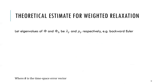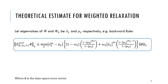The matrix form of this error propagator can be written in terms of phi and phi_delta. Let the eigenvalues of phi and phi_delta be lambda_gamma and mu_gamma respectively, where gamma goes from 1 to the number of points in space. Substituting these into the previous matrix and doing some algebra, we derived the theoretical convergence estimate for weighted relaxation. Unfortunately, this did not turn out to be sharp, but by simplifying in a different way, we could derive a sharper estimate.